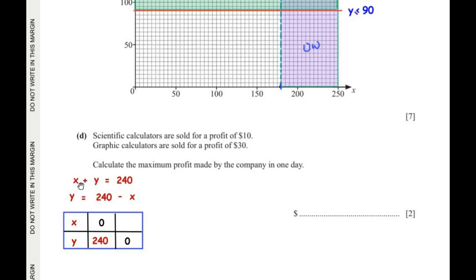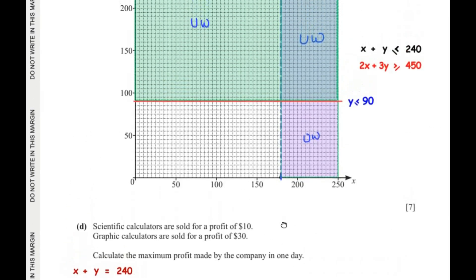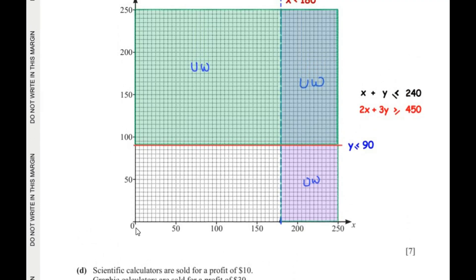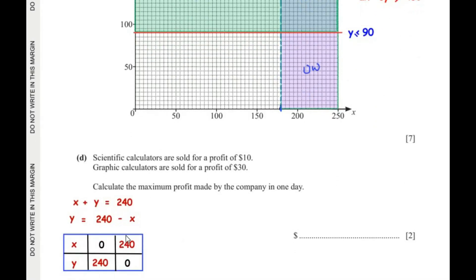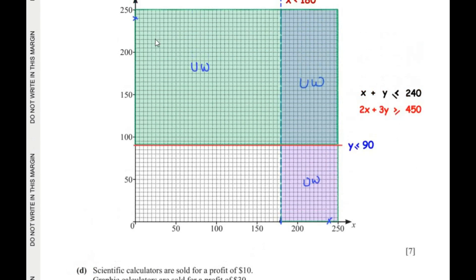We plot the point (0, 240) — two blocks below 250 on the y-axis — and (240, 0) — two blocks left of 250 on the x-axis. We draw a solid line connecting these two points and label it x + y = 240.